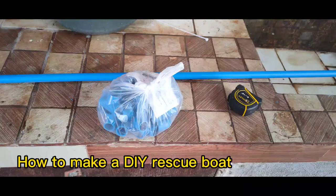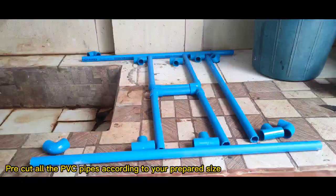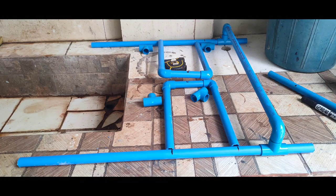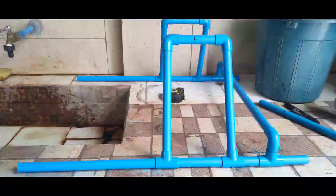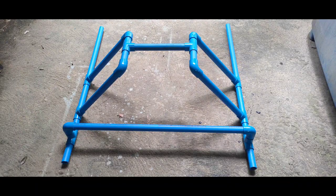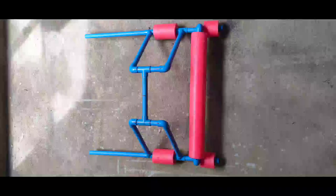How to make a DIY rescue boat. Pre-cut all the PVC pipes according to your prepared size. Connect all pieces together and place the floater noodles.